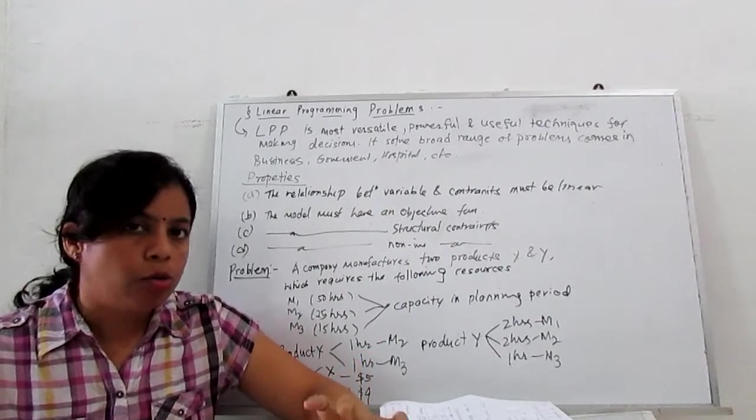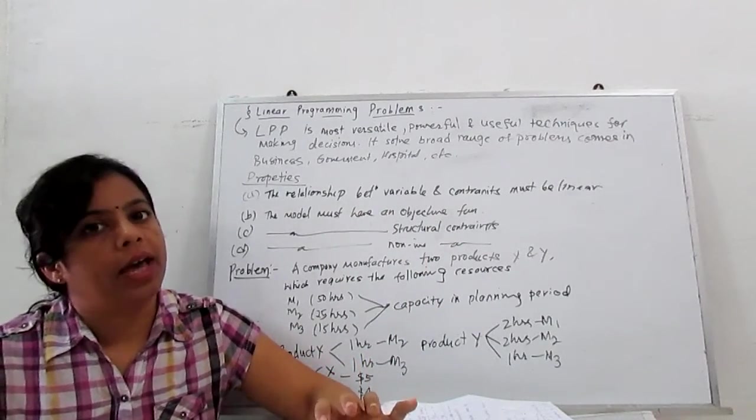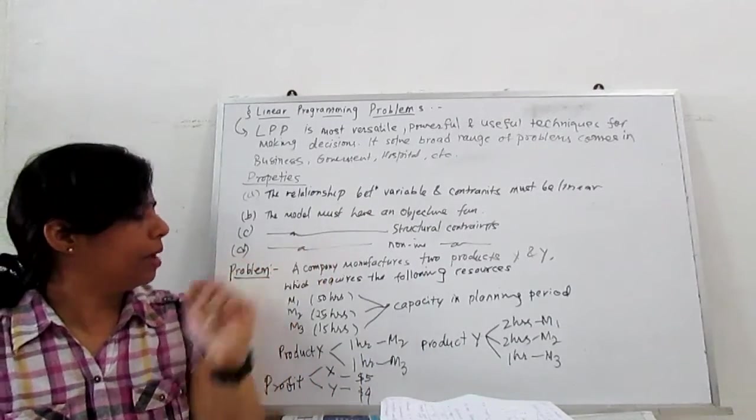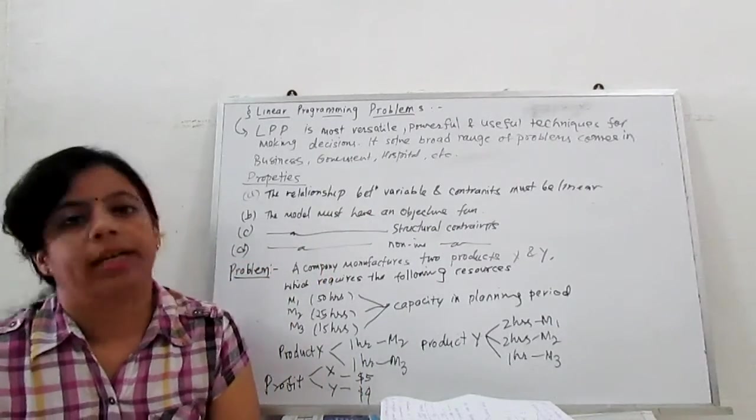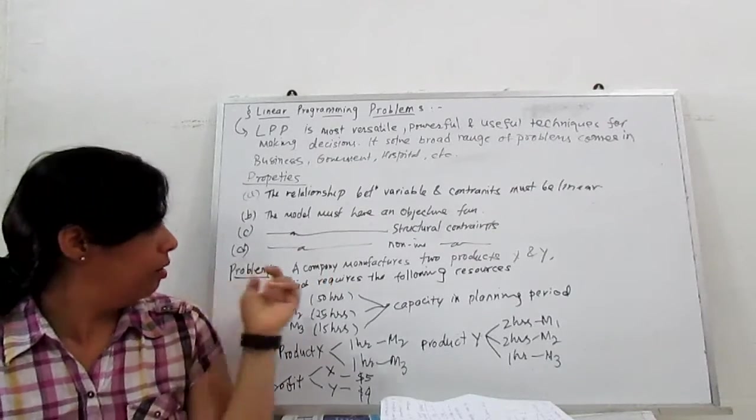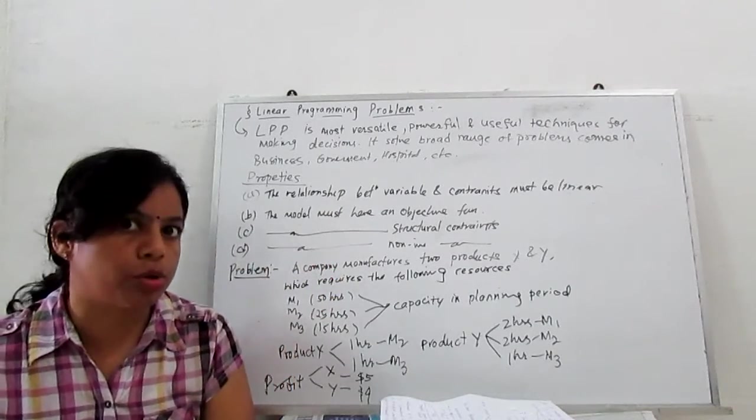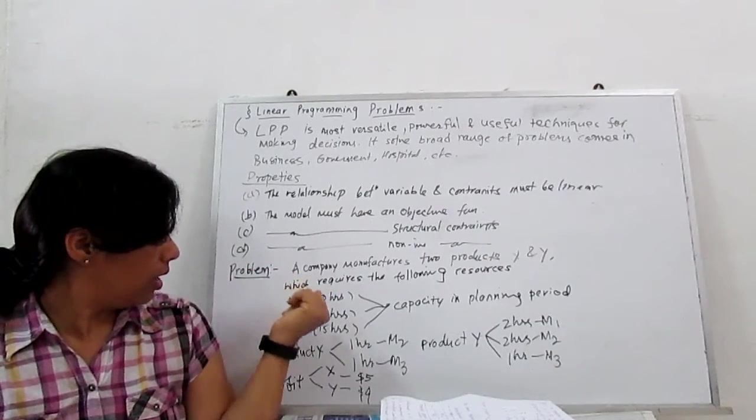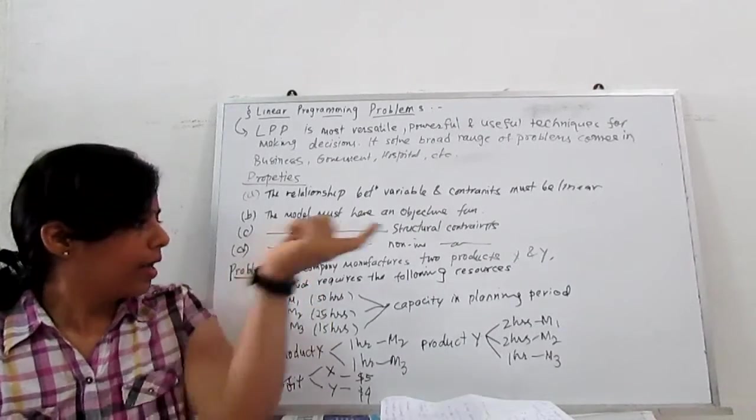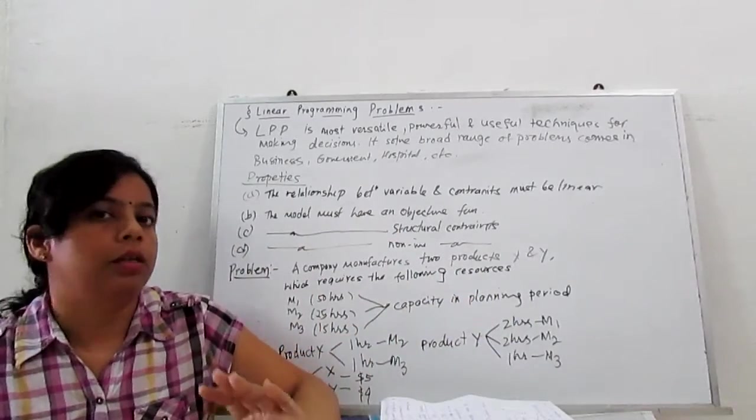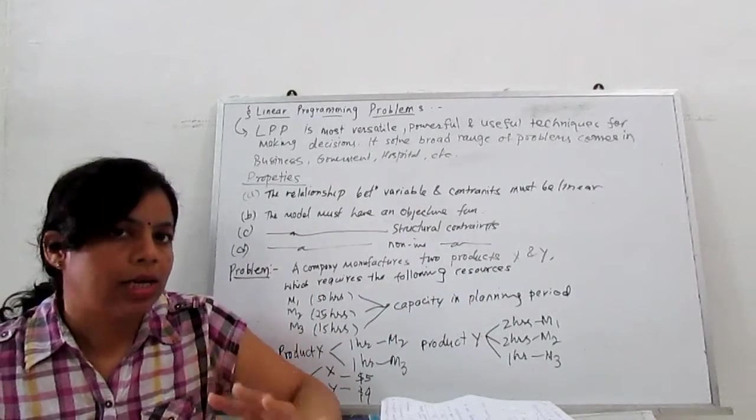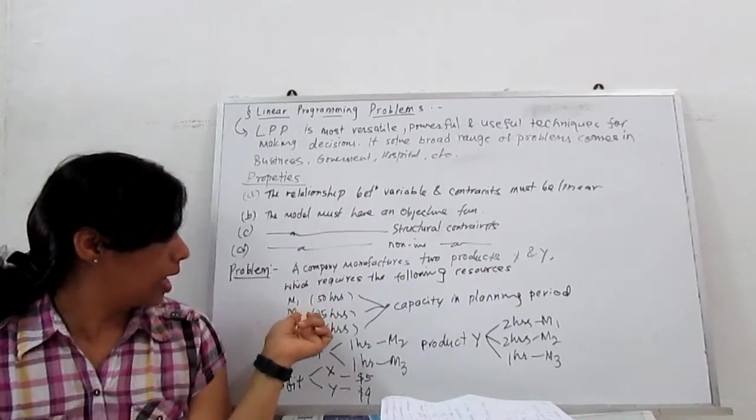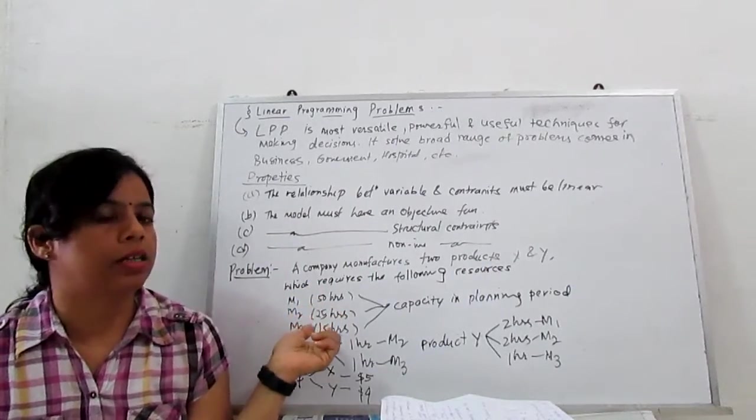So let's see how to formulate any LPP problem. For example, a company manufactures two products X and Y, which require the following machines. There are three machines: machine one, machine two, machine three. Every machine has a certain capacity at the planning period. For the first machine, capacity is 50 hours, second is 25 hours, third is 15 hours.